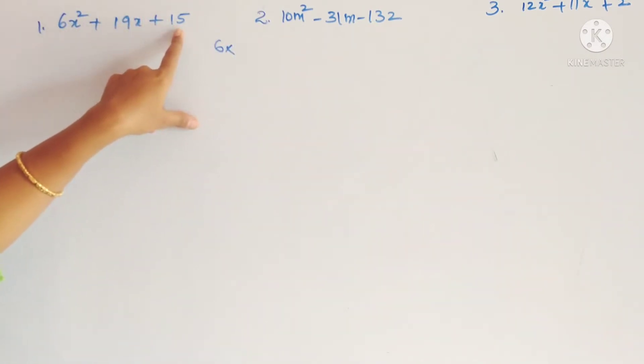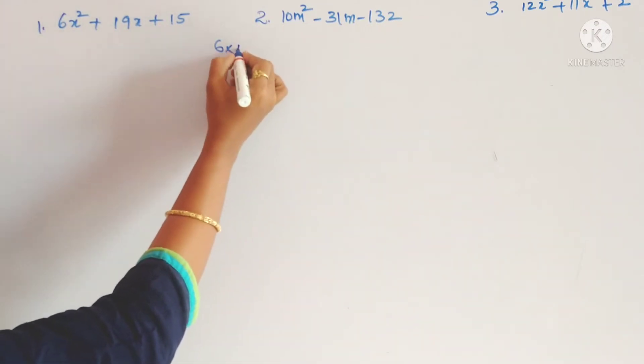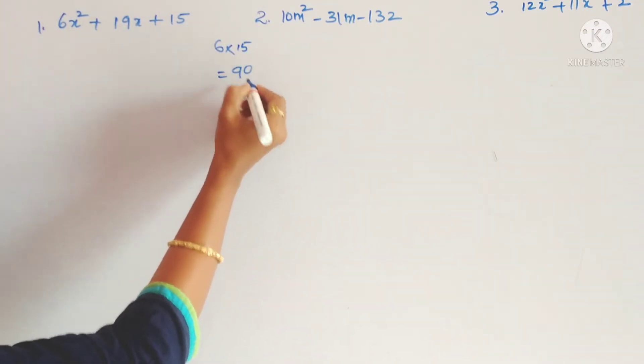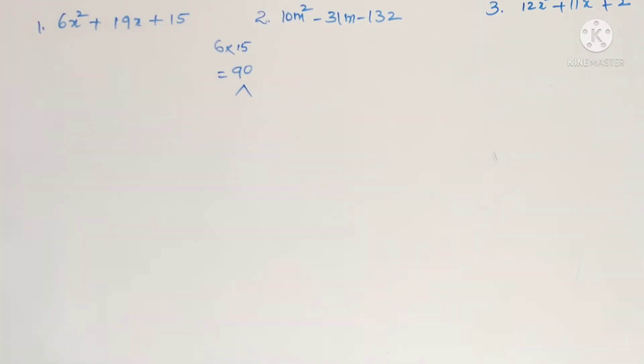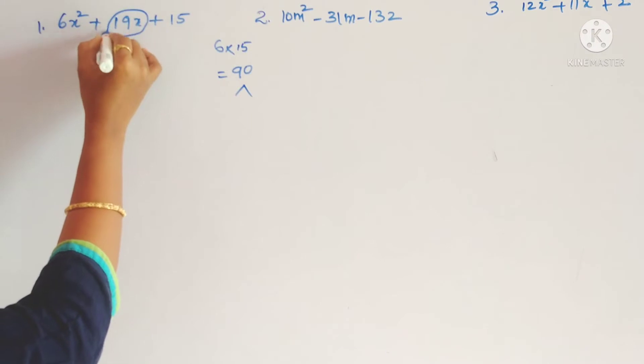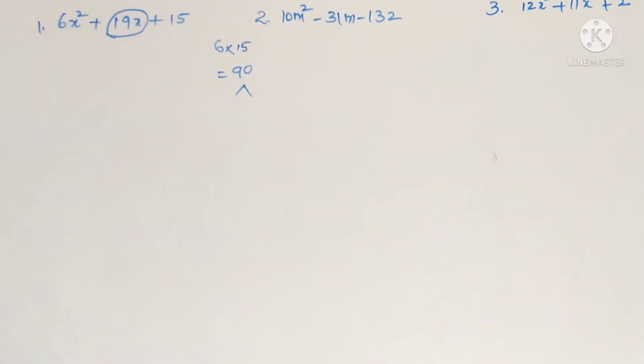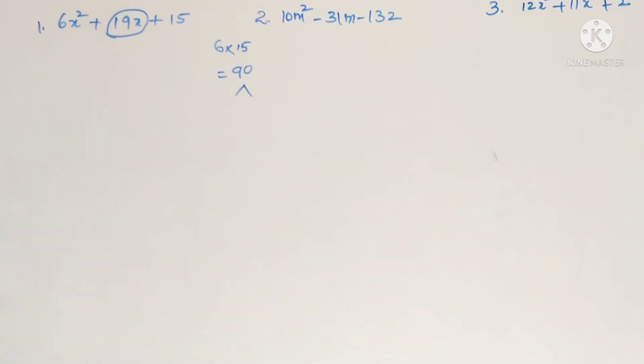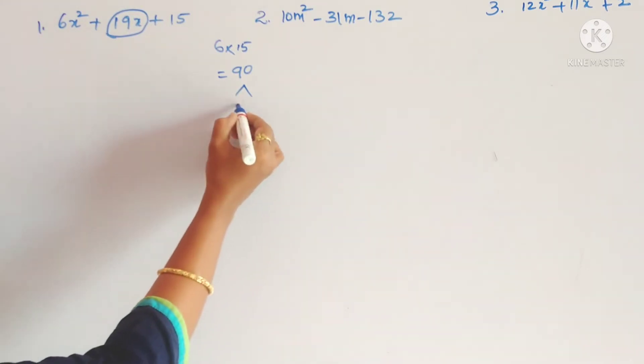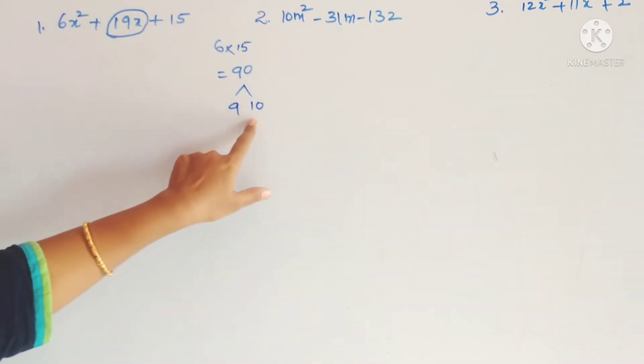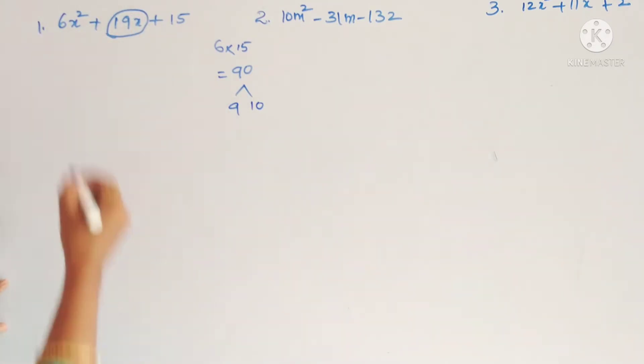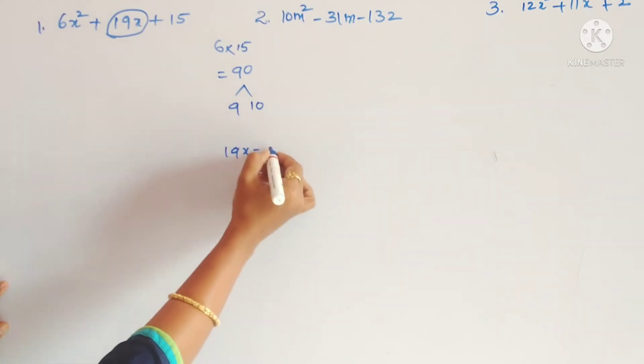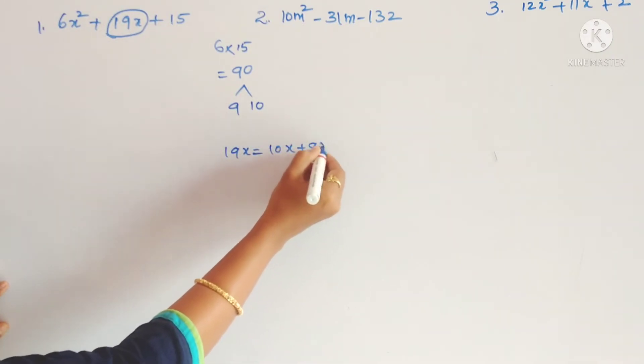So 6 is there. Now take 6 and the x term. Take that constant 15. 6 into 15 is 90. So if you find 90's factors and here we have 19x. So what number? 90's factors are 9 plus 10 equals 19.